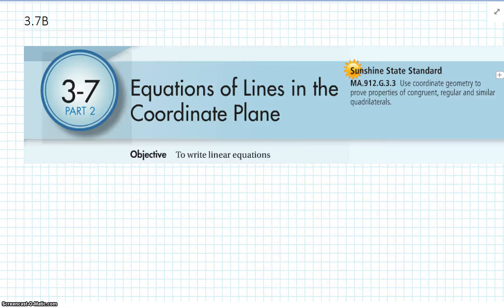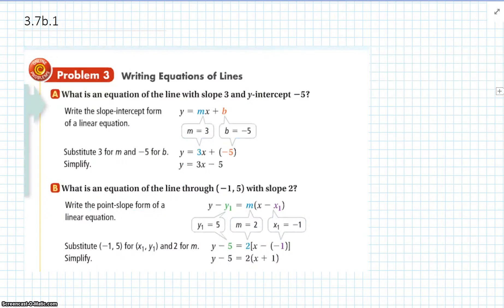Geometry, Chapter 3, Section 7, Part 2: Continuing with Equations of Lines in the Coordinate Plane. The other day we talked about equations — we talked about slope-intercept form and we talked about point-slope form.